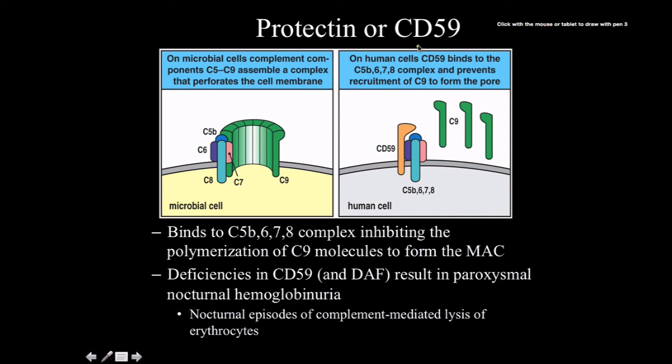This diagram here shows protectin. I don't know why people would ever call it CD59. I like where the name lends itself. That helps it easier to remember, but if you wanted to, you could call it this. And what this is showing here is that what this is mainly doing is it blocks the polymerization, inhibiting the polymerization...